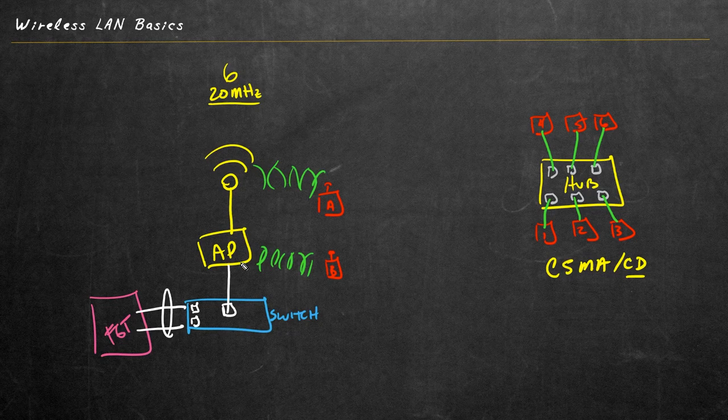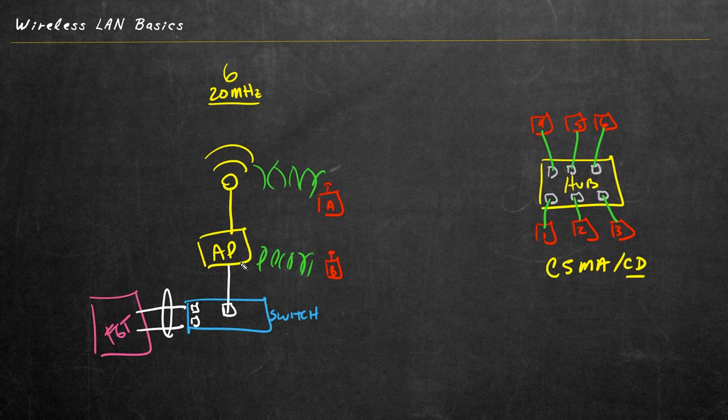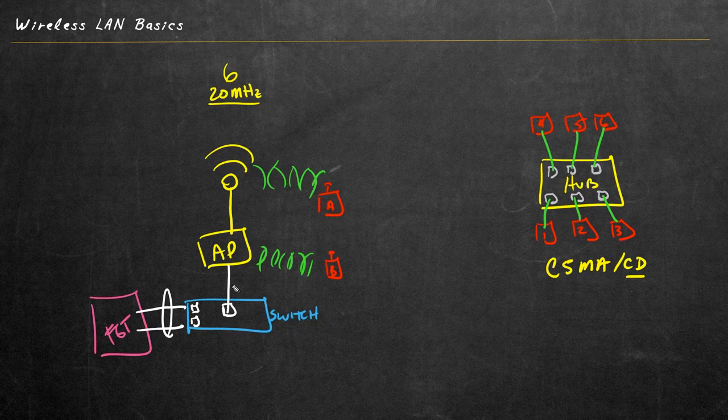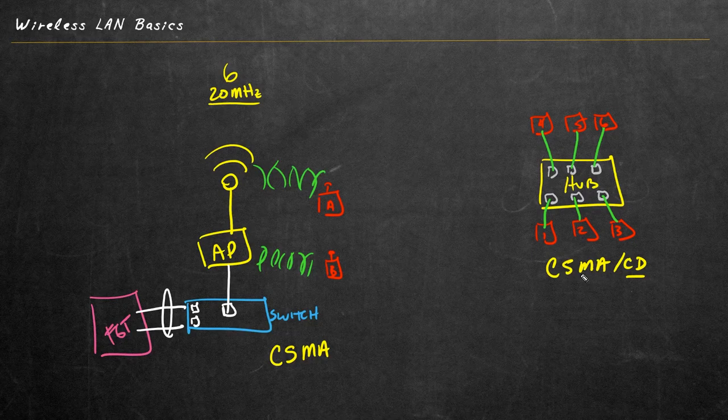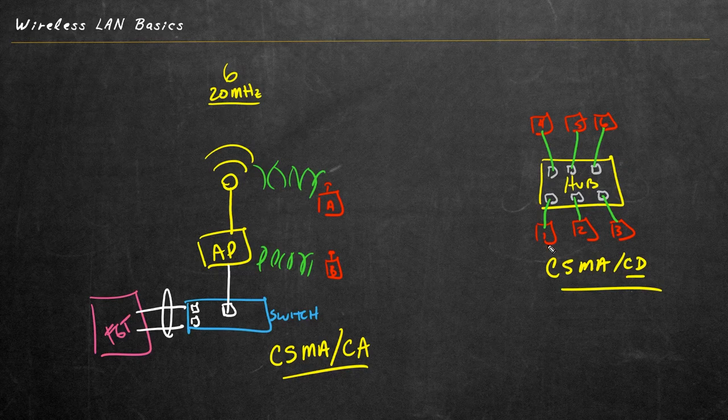However, what's different is the mechanism they're going to use to avoid having a collision. So over here in the wireless space, we're using a technology called carrier sensing, multiple access, that part's similar, but instead of collision detection, we're going to use collision avoidance. And here's a quick story that can help us identify the difference.